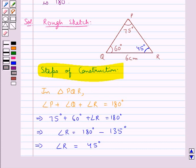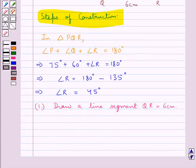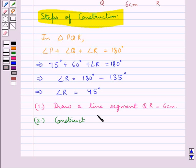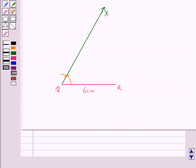Now that angle Q is of measure 60 degrees, in the next step we construct angle XQR equal to 60 degrees. This angle XQR is of measure 60 degrees.